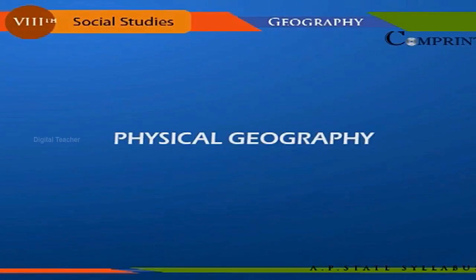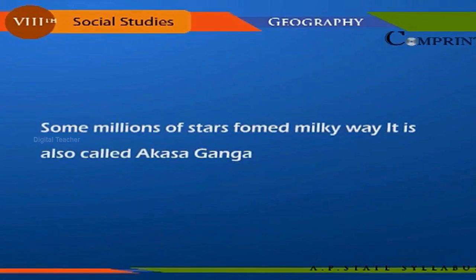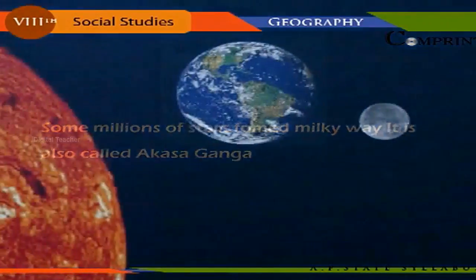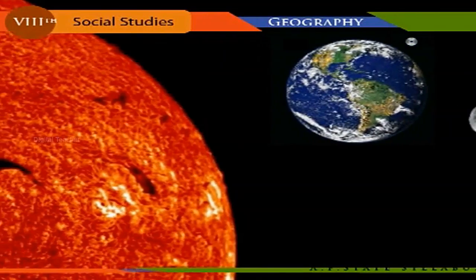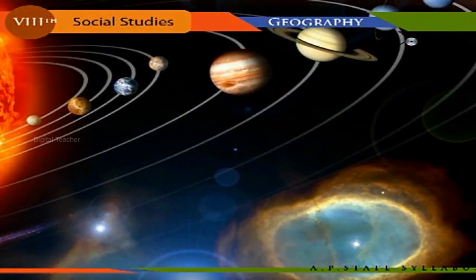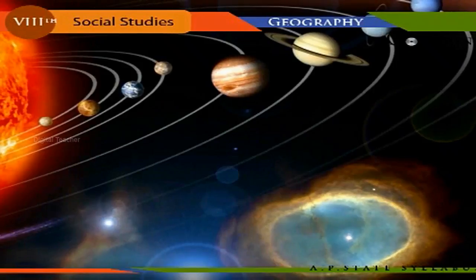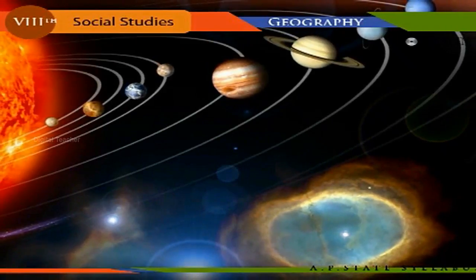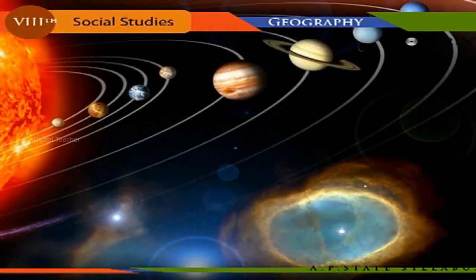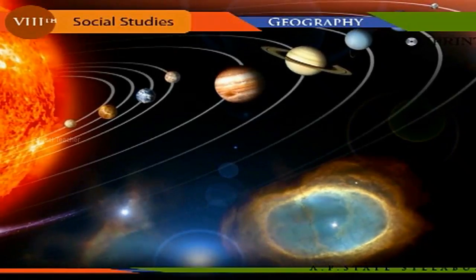Physical geography: the solar system and the earth. The Milky Way, also called Akash Ganga, consists of some millions of stars. The Sun is the nearest star to the earth and is a burning sphere of gases. Nine planets, 162 satellites, and a number of asteroids — also known as planetoids — are together called the solar system. The earth is one among the nine planets, and the Sun is 1.3 million times bigger than the earth.